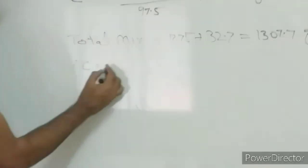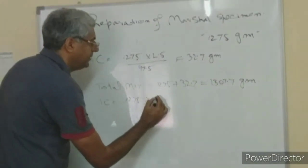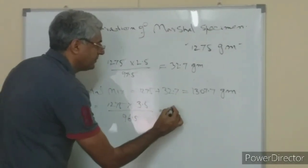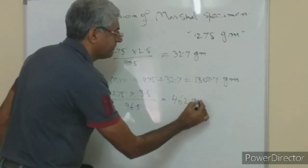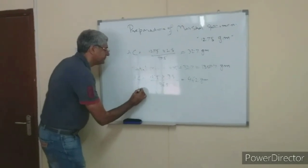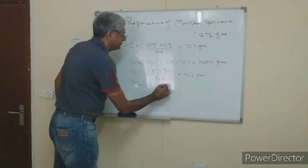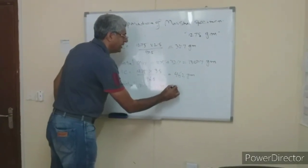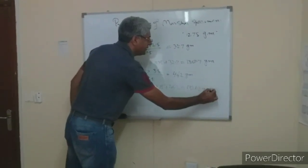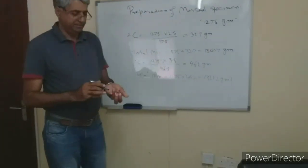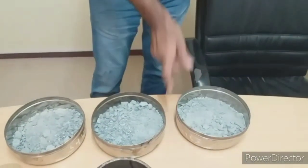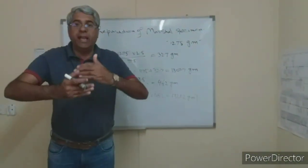For my practical demonstration, the bitumen content is 3.5%, so the remaining aggregate is 96.5%. This gives 46.2 grams of asphalt content. This 46.2 grams will be added to the 1275 grams aggregate, giving a total mix weight of 1275 plus 46.2 equals 1321.2 grams. Into each of the three blended aggregate samples, I will add 46 grams of bitumen content and mix it very well.